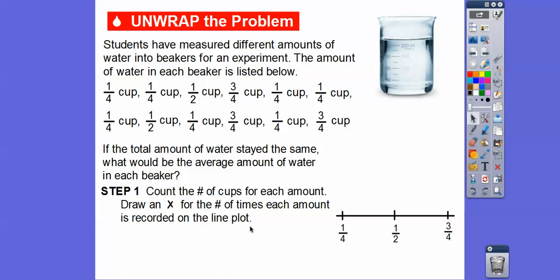Let's go ahead and do the one-fourth cups. We'll count them all up — I highlighted them in red, and it looks like there are seven of them: one, two, three, four, five, six, seven. So over here we have seven X's above the one-fourth on the line plot.